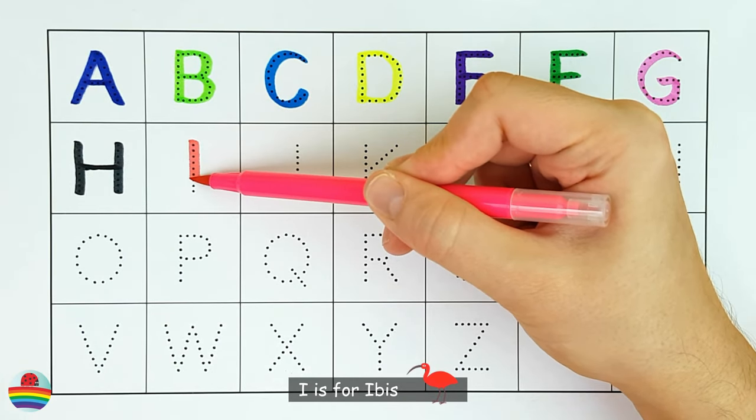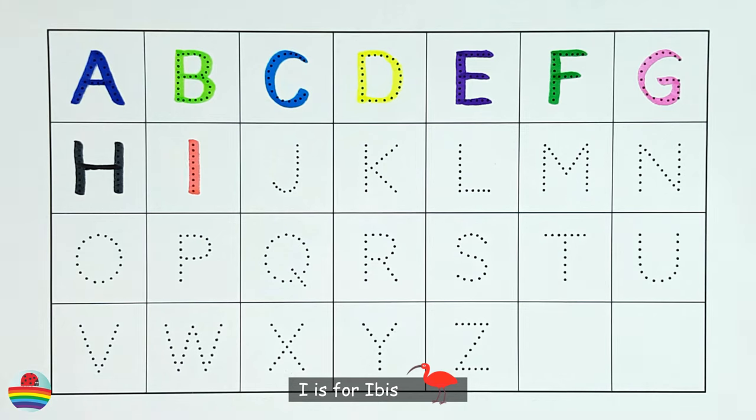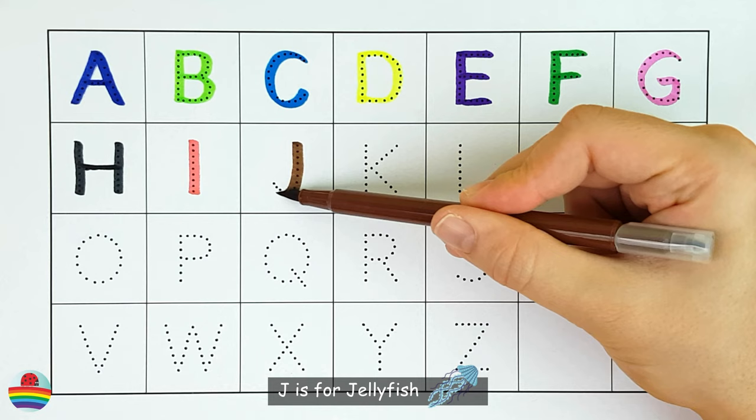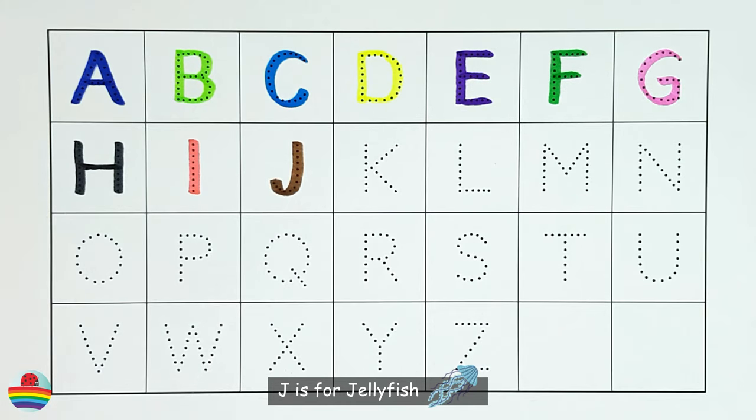I. I is for Ibis. I. J. J is for Jellyfish. J.